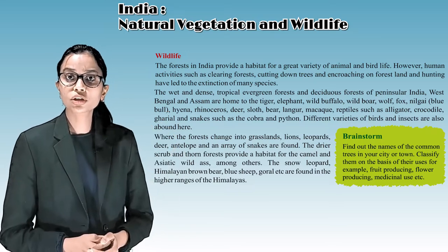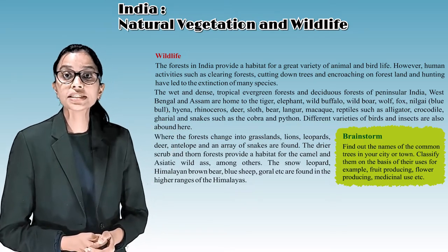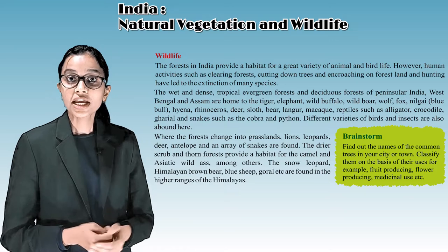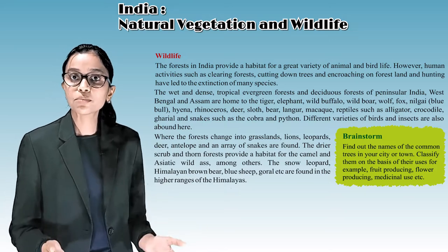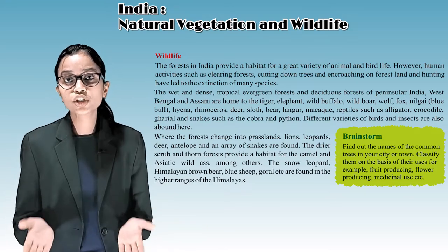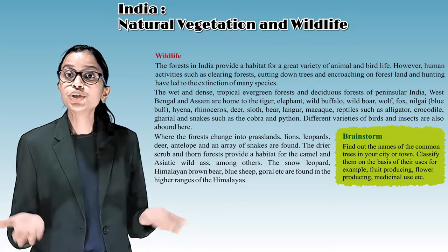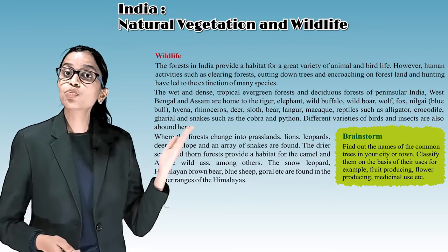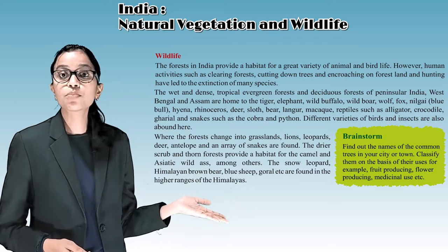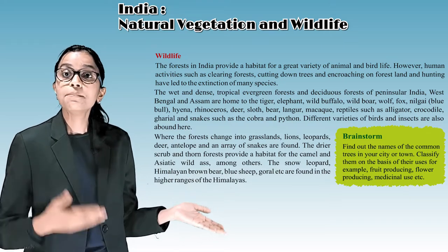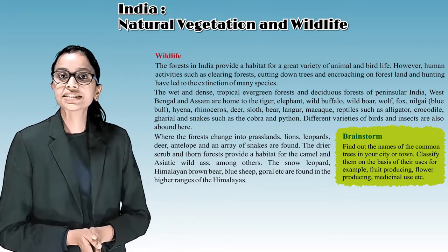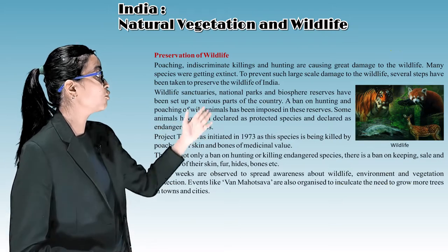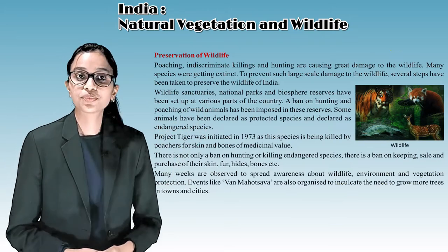Brainstorm activity: Find out the names of common trees in your city or town and classify them on the basis of their uses, for example food producing, flower producing, medicinal use, etc. Preservation of wildlife: Poaching, indiscriminate killings, and hunting are causing great damage to wildlife, and many species are getting extinct.